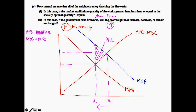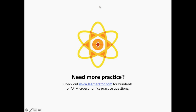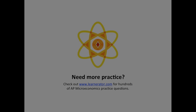And that's pretty much it for question number three. We've walked through parts A, B, and C, covering both a negative externality and a positive externality scenario. If you need more help in AP Microeconomics, feel free to check out LearnRator for hundreds of practice questions, and check out our other videos for more FRQ solutions. I'll see you guys next time.